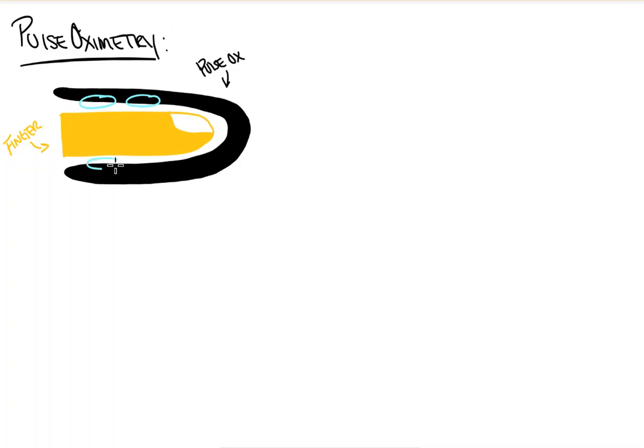And on the other end, there are two light detection sources for those diodes to direct their light towards. These are also indicated in blue. Light is then emitted from the emission source through the finger towards the sensor at the opposite side at two different wavelengths.